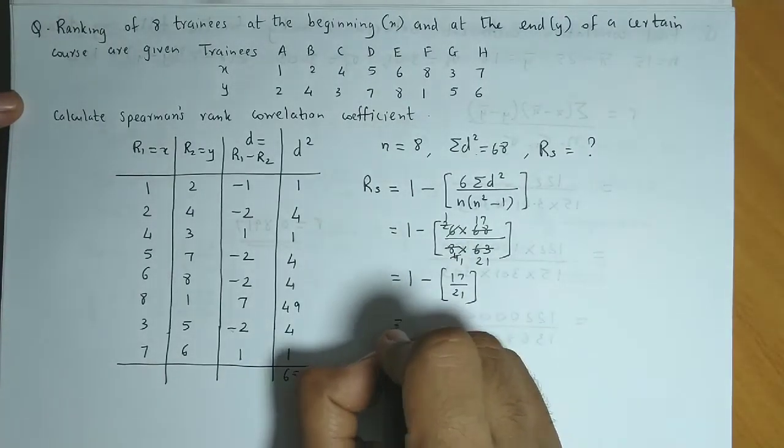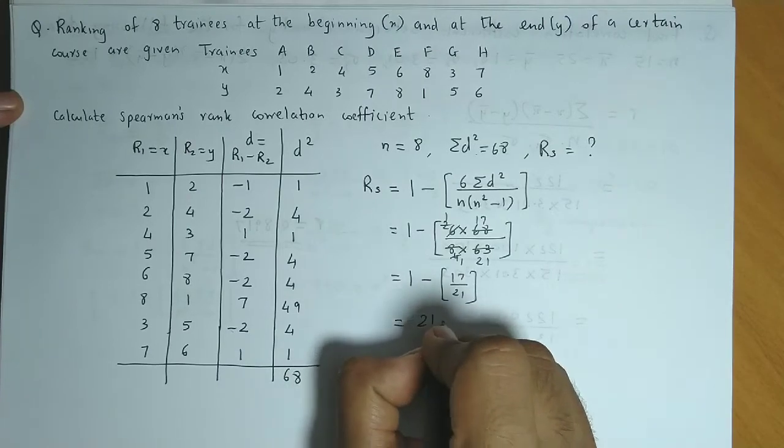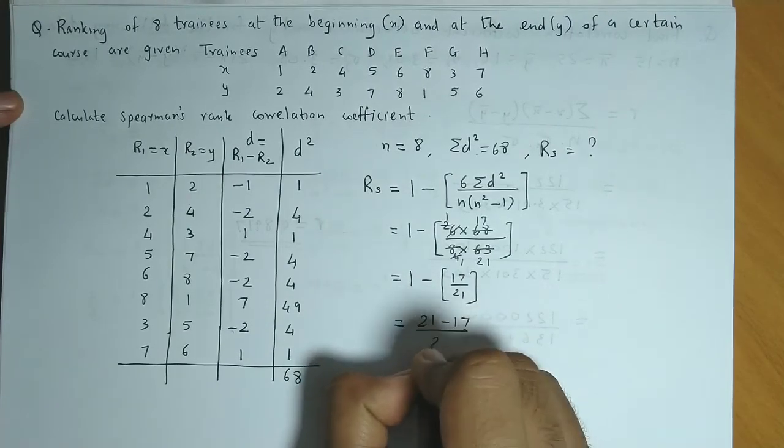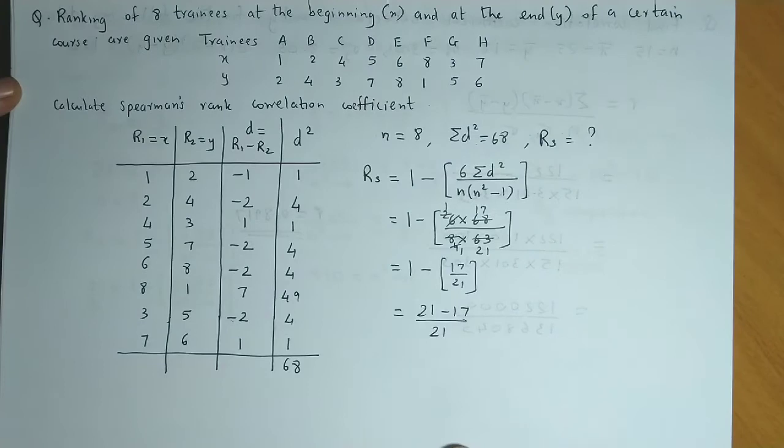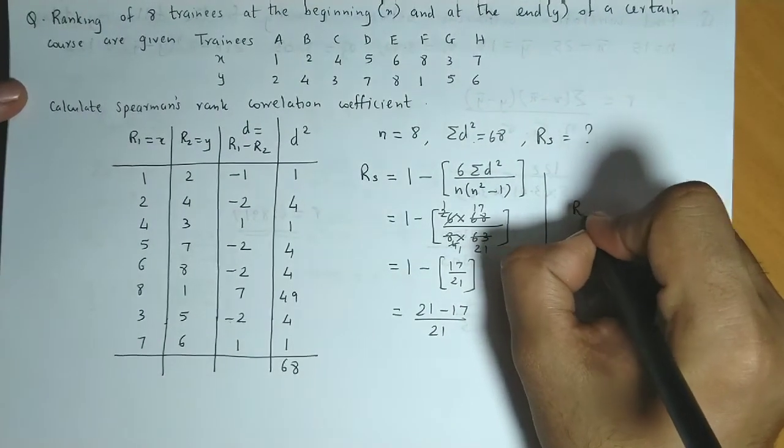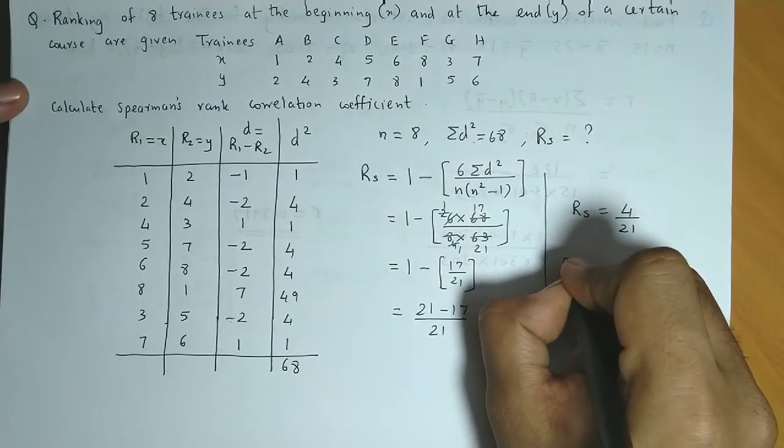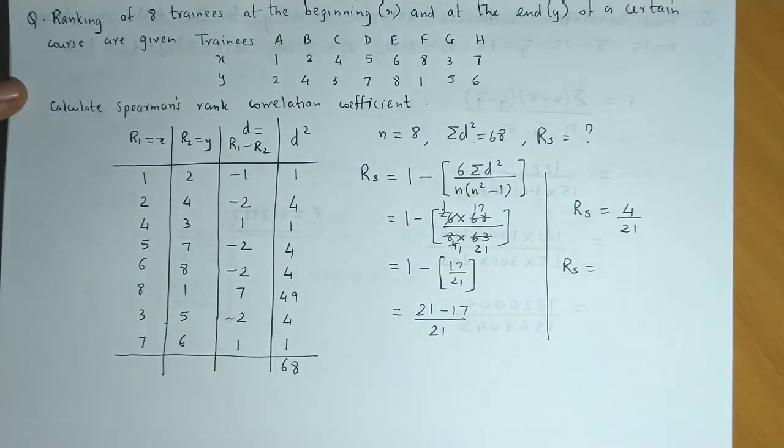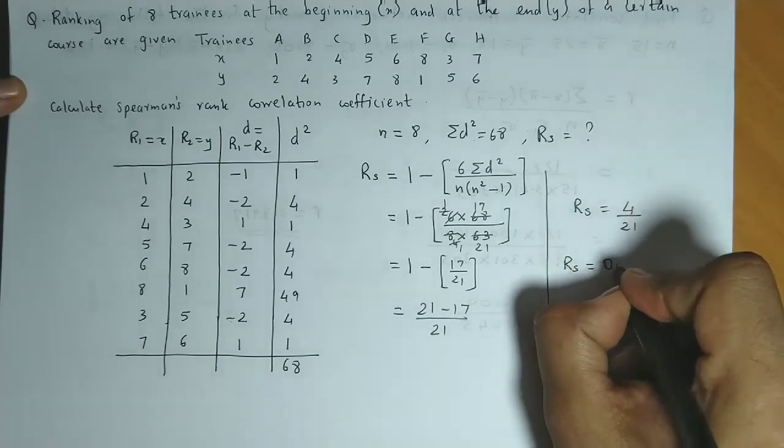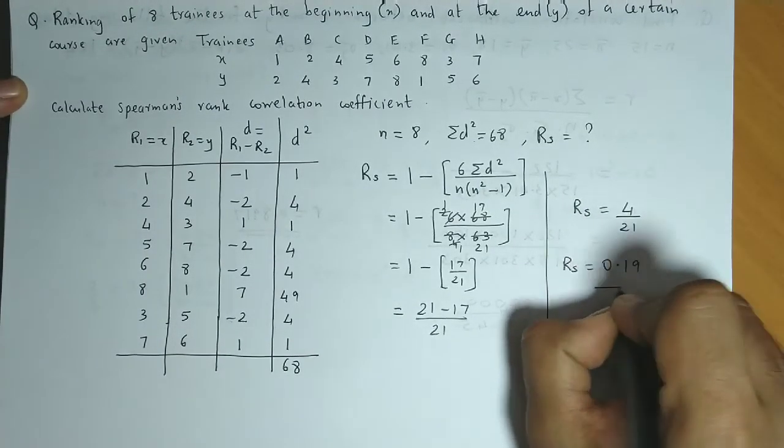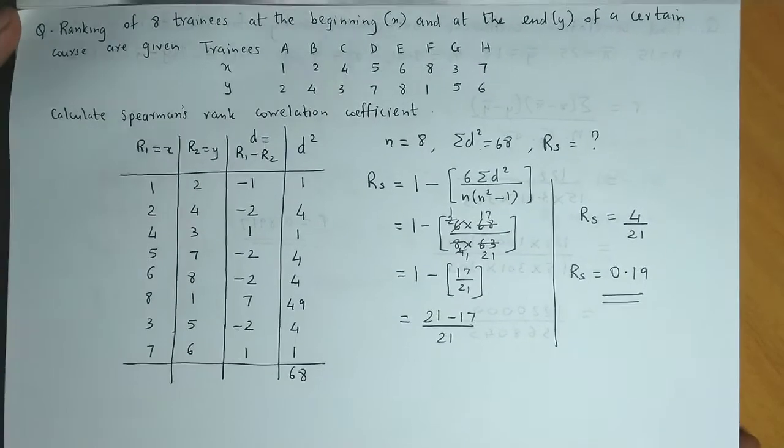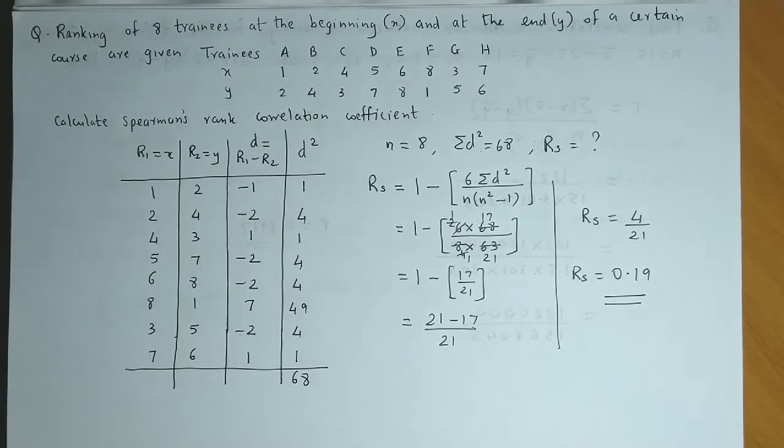We equalize the denominator, we get 21 minus 17 upon 21. So we have RS equal to 4 divided by 21. Let us perform this division. So 4 divided by 21 gives 0.19. So the rank correlation coefficient value is 0.19.